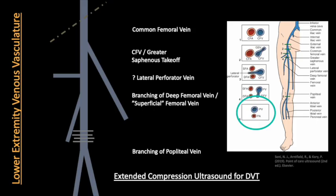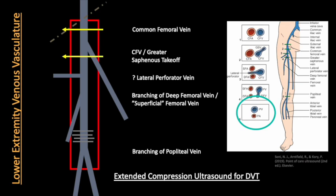The extended compression ultrasound protocol involves compressing the deep venous tree from the inguinal crease to the popliteal fossa every couple of centimeters, and capturing images of any areas of non-compressibility as well as key locations. We should capture images at the common femoral vein, the takeoff of the greater saphenous vein, the level of the lateral perforator vein if visualized, the joining of the deep femoral vein and the femoral vein, and the confluence of the popliteal vein. These areas are the most commonly implicated in DVT formation and represent the minimum documentation requirements to show with high likelihood that there is not a DVT present.